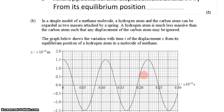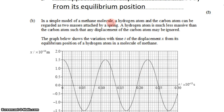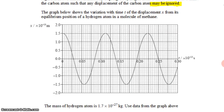We then move on to a simple model of a methane molecule made of hydrogen and carbon, and we can think of them as two masses attached by a spring. The hydrogen atom is much less massive than the carbon atom, such that any displacement of the carbon atom may be ignored. So we're just talking about a hydrogen atom bouncing back and forth on the spring attached to the carbon atom. The graph below shows the variation with time of the displacement from the equilibrium position.